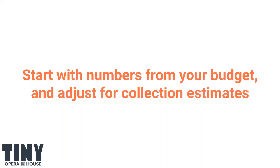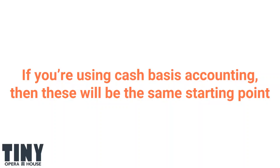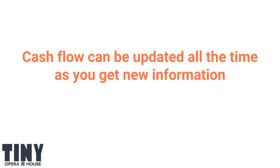The cash flow is really what you're managing towards, because it's more of a living document that changes every week as you adjust with more information. If you're doing cash basis accounting, then your budget is the same as your cash flow — you will still adjust it as you learn more information, but your starting point will just be the budget. The cash flow lives as more of an ongoing management tool, where you're always trying to tweak it so that your projections of your cash balance over the next couple of months are as correct as possible.